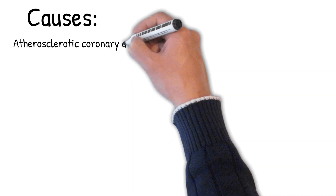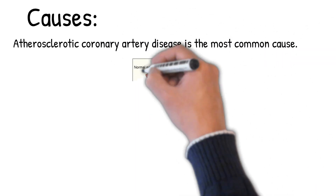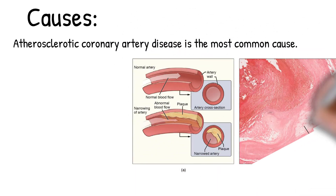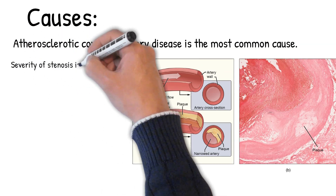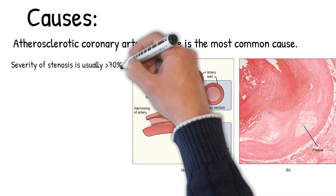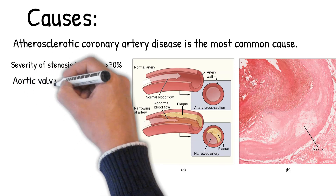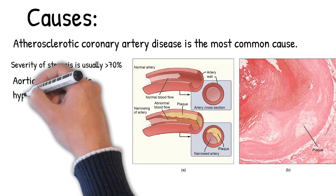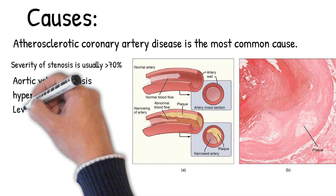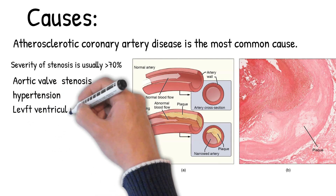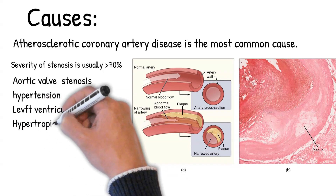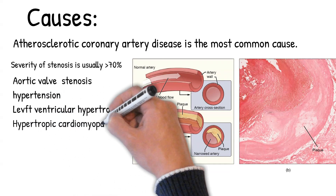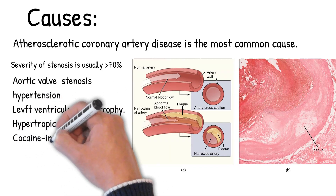Causes include: atherosclerotic coronary artery disease, which is the most common cause, with severity of stenosis usually greater than 70%. Aortic valve stenosis or hypertension with concentric left ventricular hypertrophy, where O2 supply is not adequate for the thickened muscle wall. Hypertrophic cardiomyopathy, cocaine-induced coronary artery vasoconstriction, and inadequate coronary artery flow response during exercise or stress.